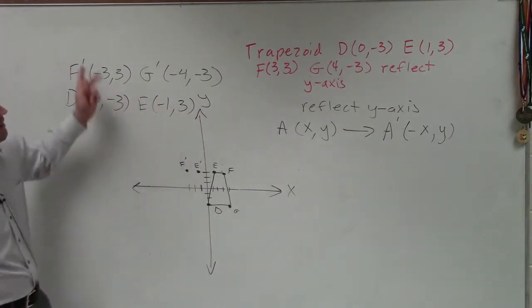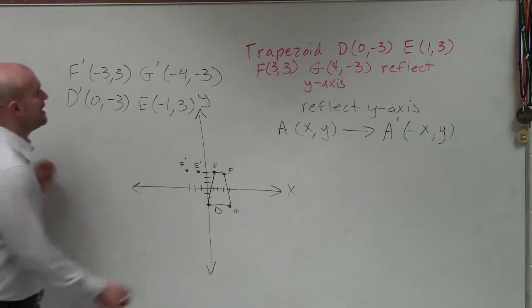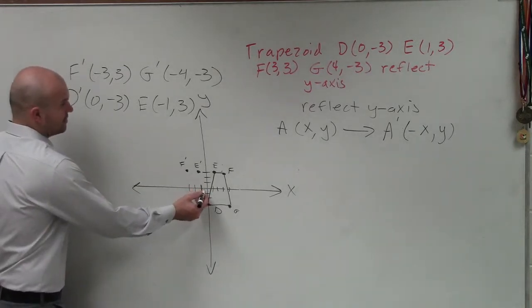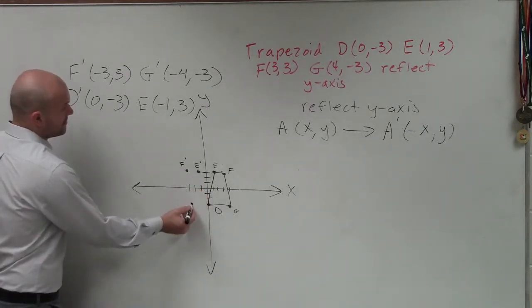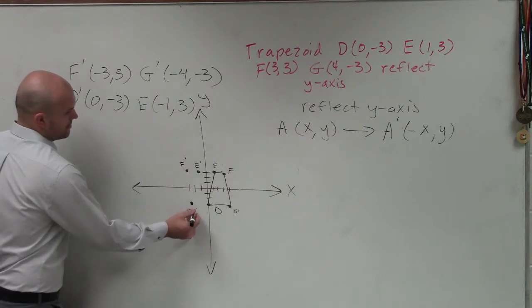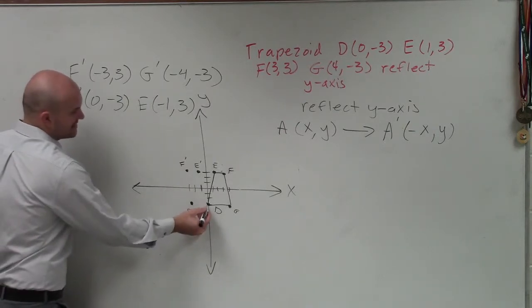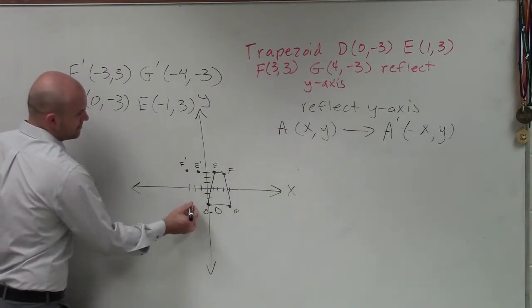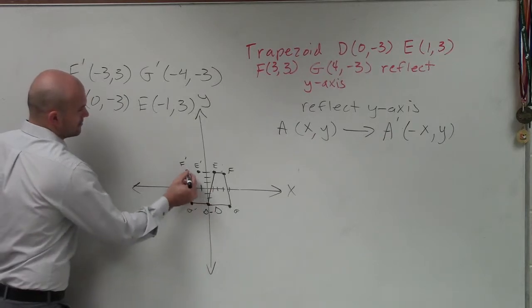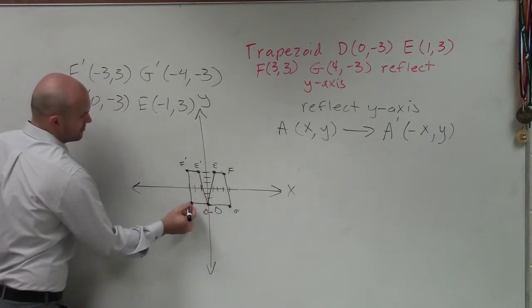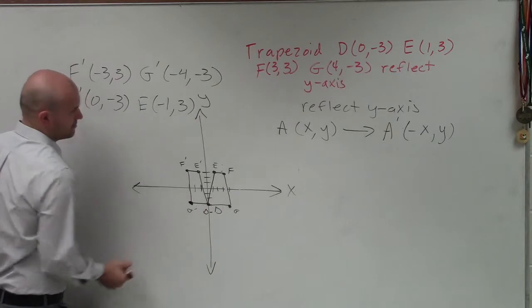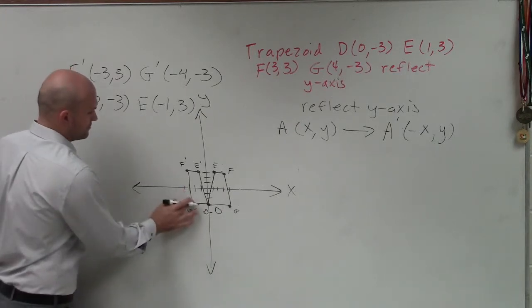And you guys can see how I already graphed E and F. Now my G will be negative 4, negative 3. And D is going to be the exact same point. Oh, that's supposed to be 4. No wonder.